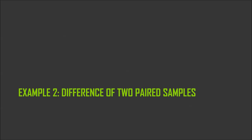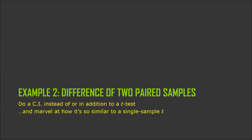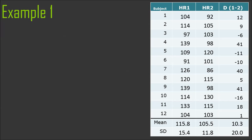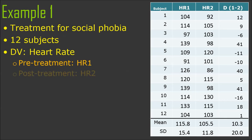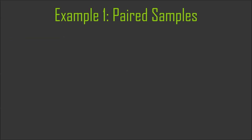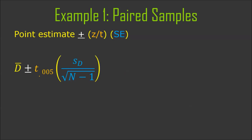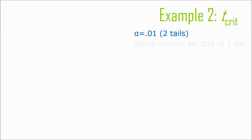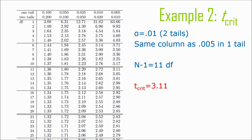Let's run through an example from the previous lecture — difference of two paired samples. We'll use the same made-up data about treatment for social phobia and heart rate with 12 subjects: pre-treatment heart rate versus post-treatment heart rate. Let's find a 99% confidence interval for the difference between pre- and post-treatment heart rate. Our sample says there's a certain difference, but how confident are we about what the actual difference is? The confidence interval is always a point estimate plus or minus a z or t-type score times a standard error. We need the t-score that cuts off 0.005 proportion in each tail of the t-distribution. The degrees of freedom is 11 because n minus 1 with 12 participants.